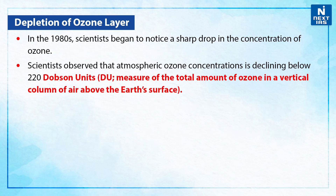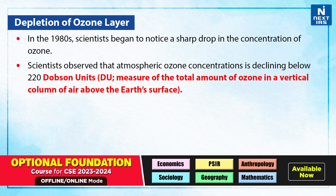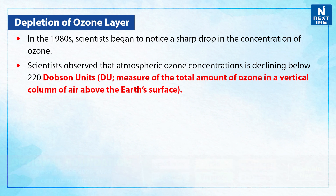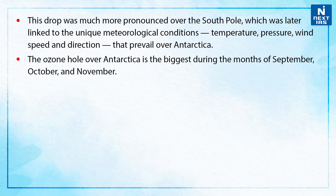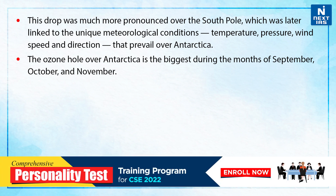Regarding the depletion of the ozone layer: in the 1980s, scientists began to notice a sharp drop in ozone concentration, observing that atmospheric ozone concentrations were declining below 220 Dobson Units (DU), a measure of the total amount of ozone in a vertical column of air above the Earth's surface. This drop was more pronounced over the South Pole, linked to unique meteorological conditions like temperature, pressure, wind speed and direction over Antarctica. The ozone hole over Antarctica is biggest during September, October, and November.